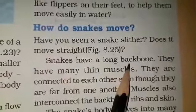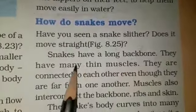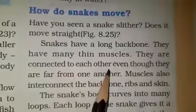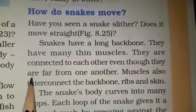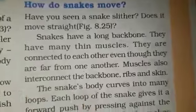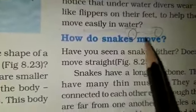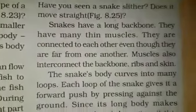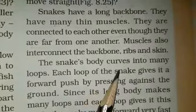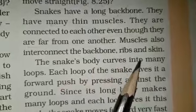Snakes have a long backbone. They have many thin, small muscles. These muscles are connected to each other and are also apart from one another. These muscles interconnect the backbone, ribs, and skin.